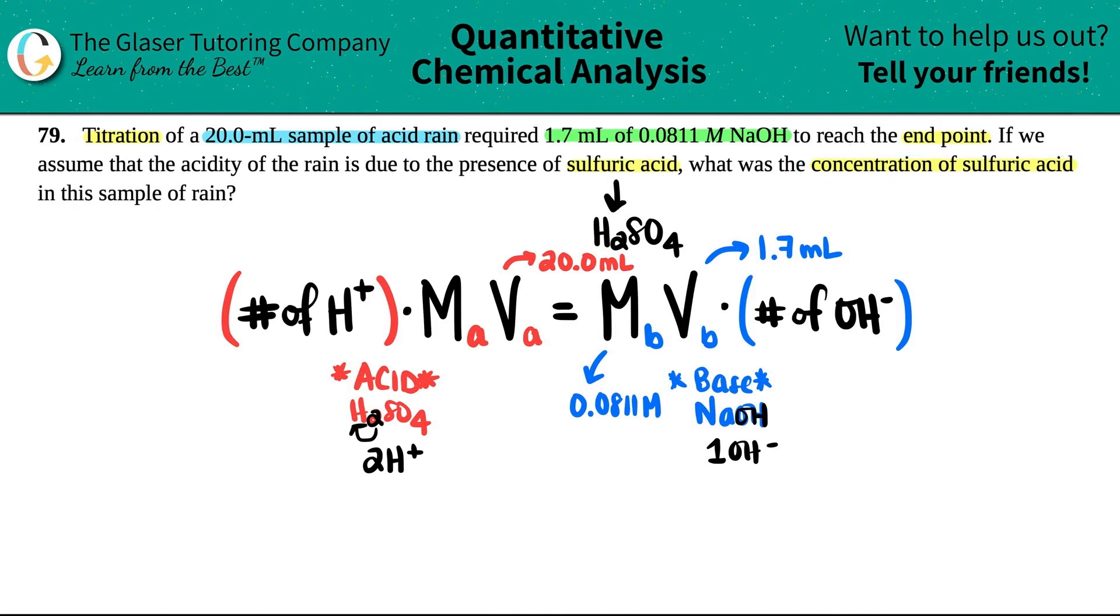Remember, concentration is just a fancy way for saying molarity. So we're looking for the molarity of the acid, which I'm going to put as an X. But now we basically have everything else. So I'm going to start from left to right and just plug in some numbers. The number of H pluses were two, so I'm going to say two times X, that's what we're solving for, times 20, equals the molarity of the base was 0.0811, the volume of the base was 1.7, and then this would be multiplied by one because I only have one OH in NaOH.